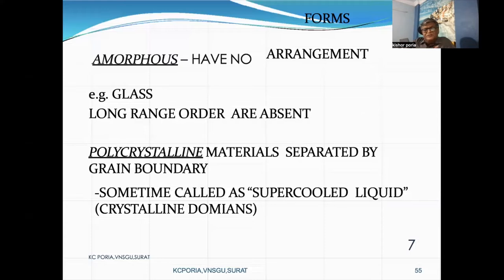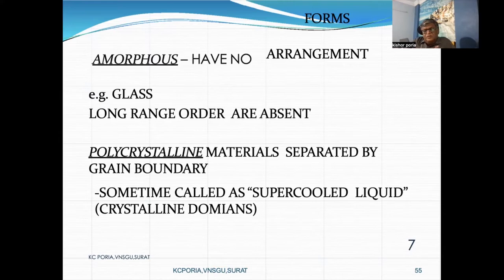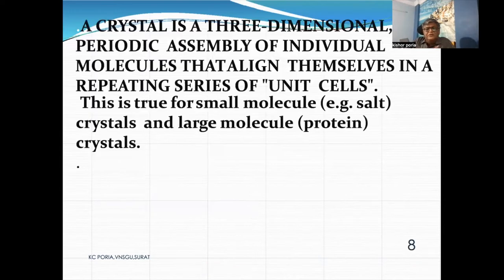The other state is called the amorphous state, where there is no regular repetition of atoms. Glass is the most suitable example. In amorphous phases, long range order is always absent. We also have the polycrystalline phase, in which domains of crystallinity are observed separated by grain boundaries. This state is sometimes also called a super-cooled liquid state in which crystalline domains exist.